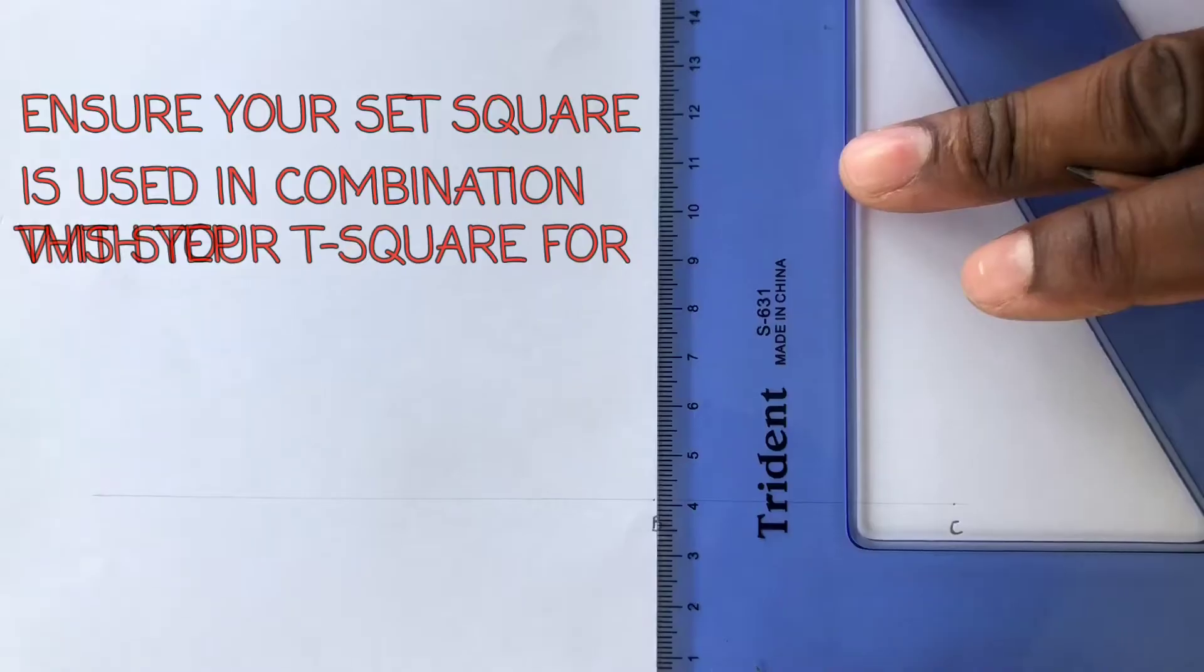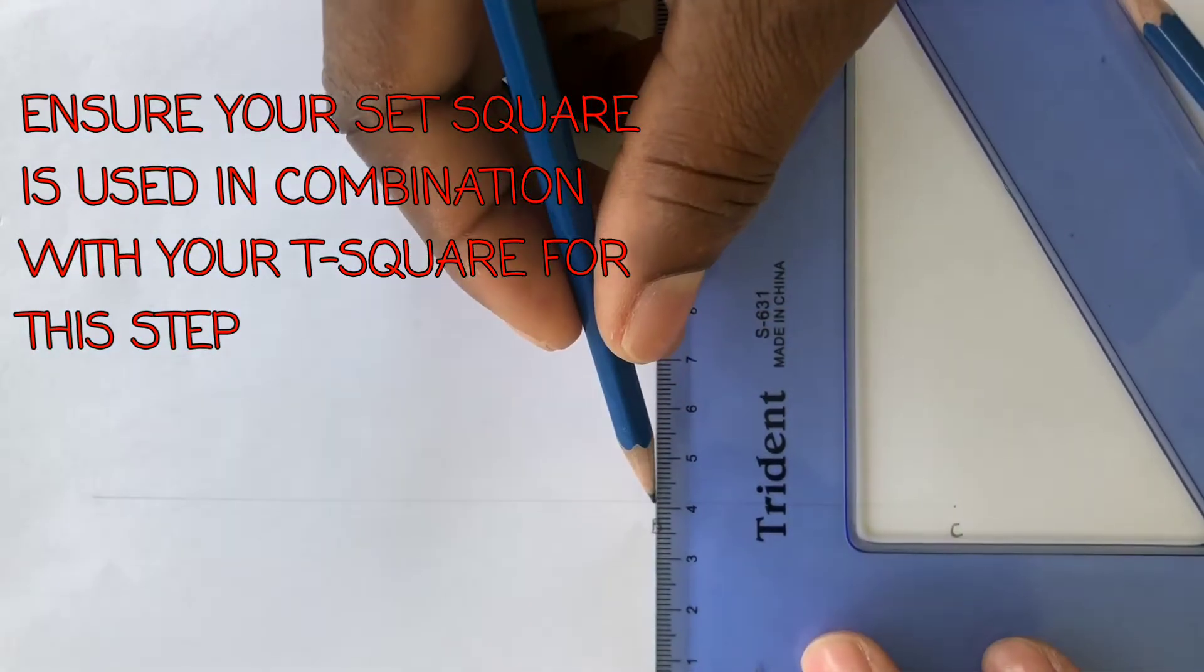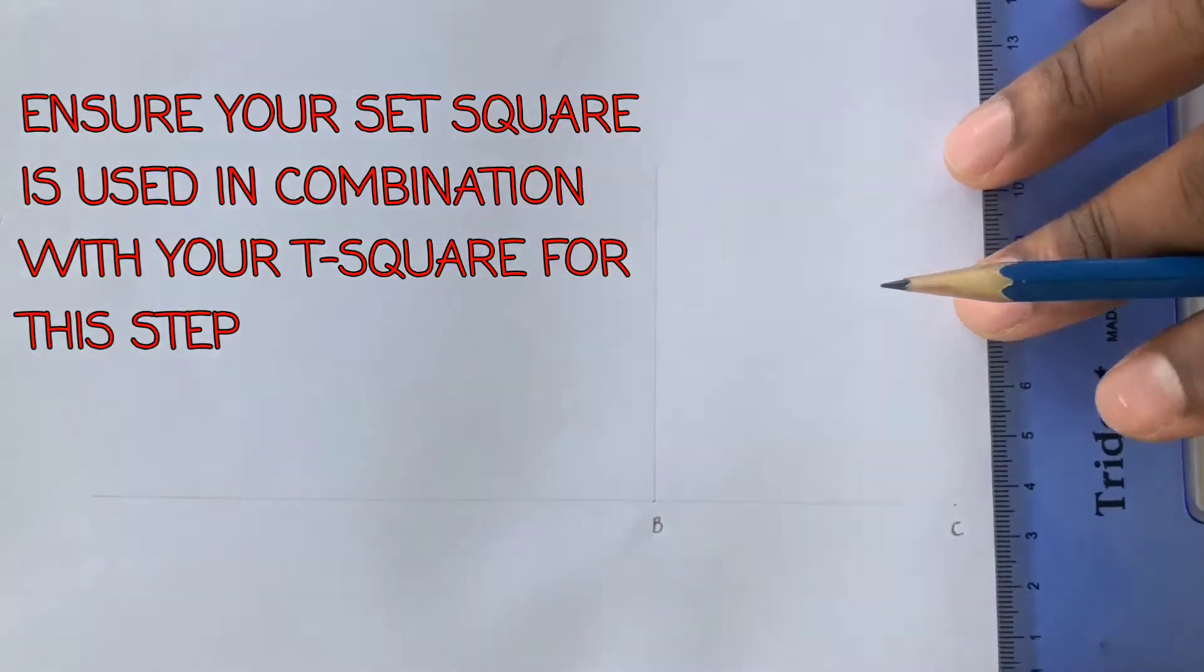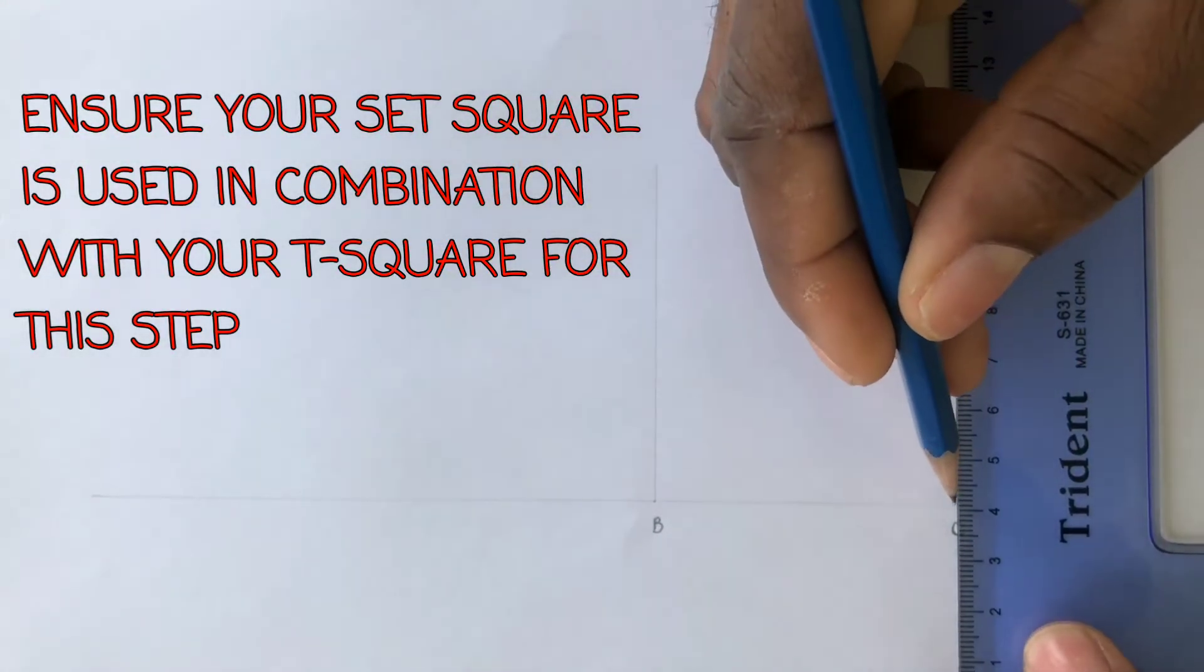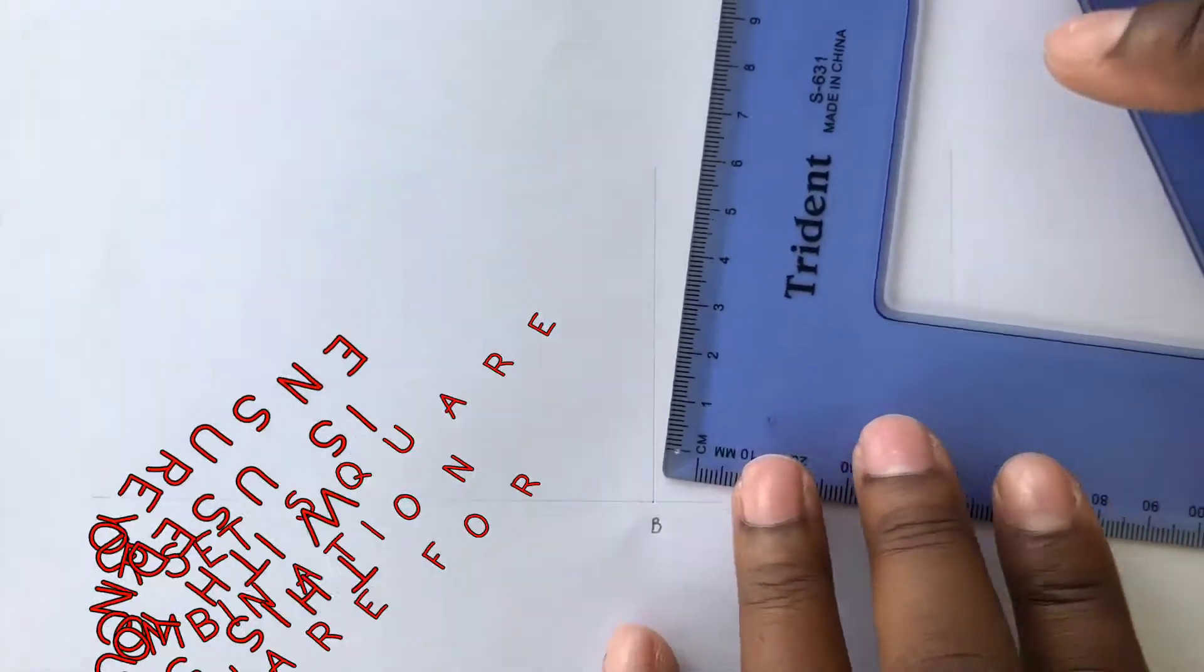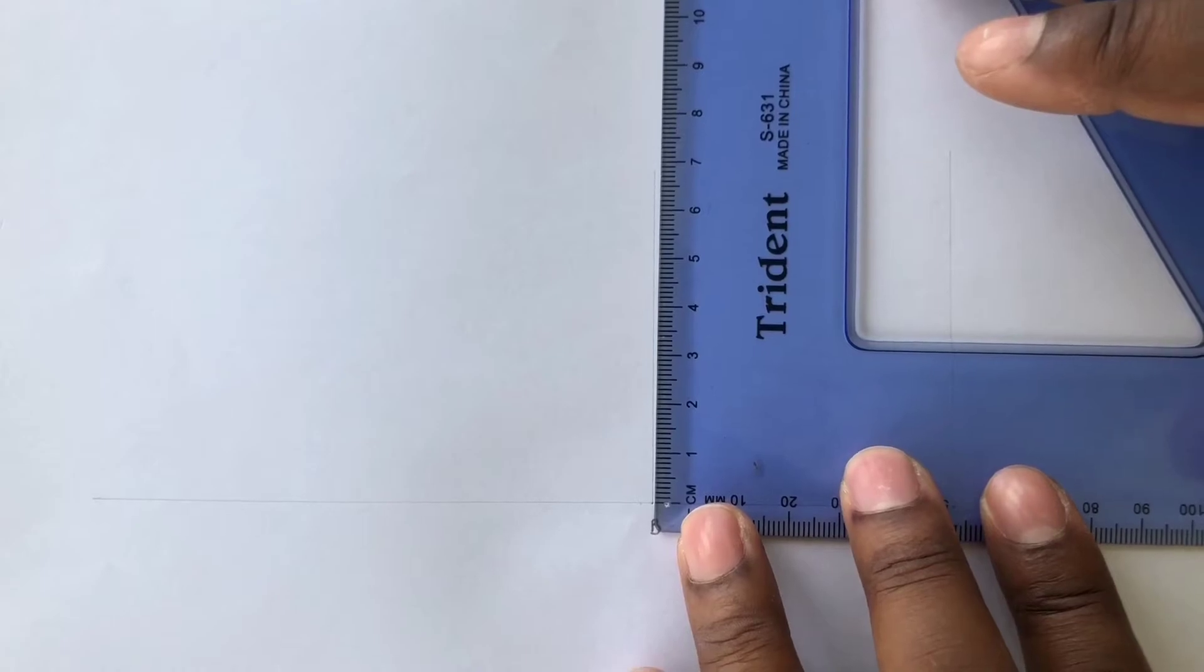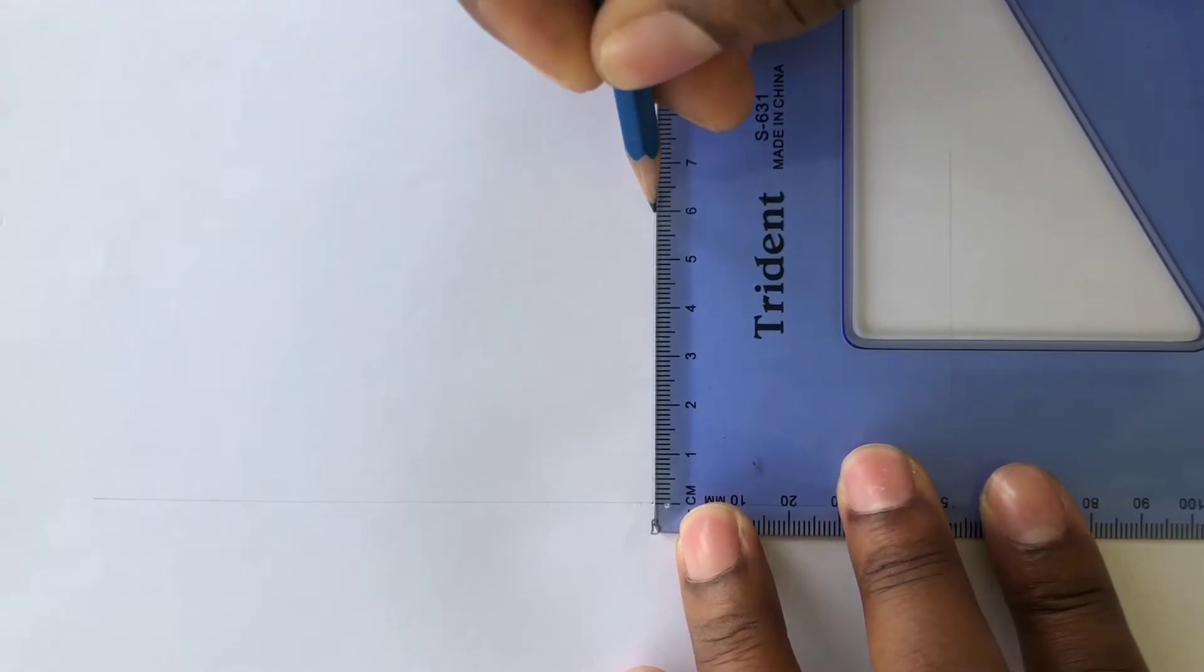Now use your T-square along with your set square to draw a perpendicular line from B and from C. Now identify 60 millimeters from B on the line you drew.